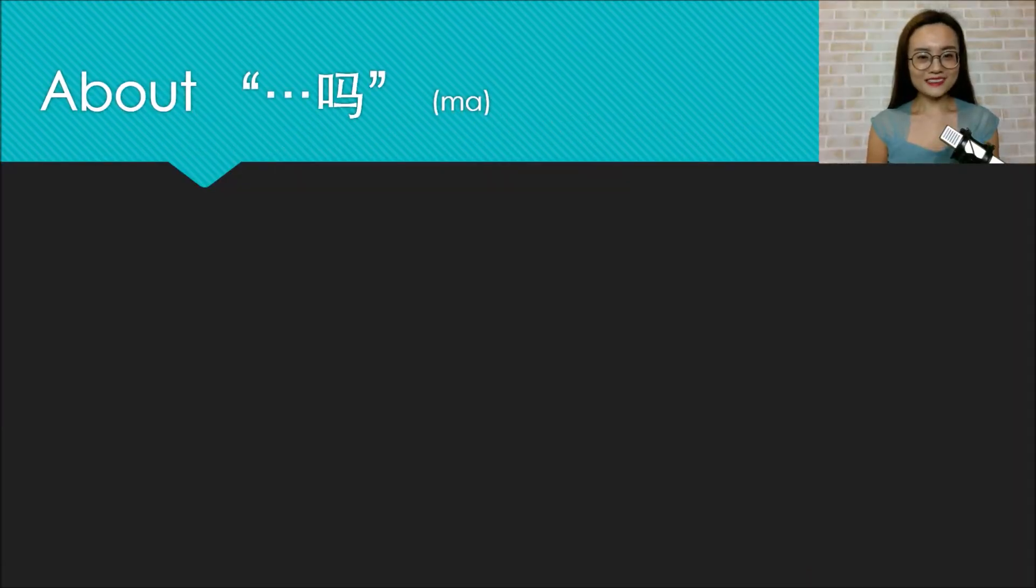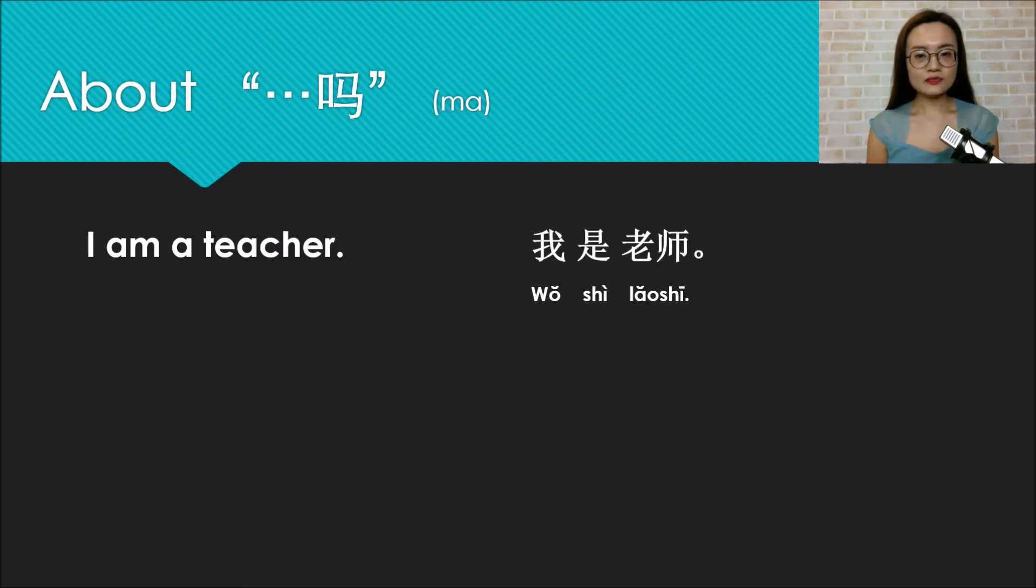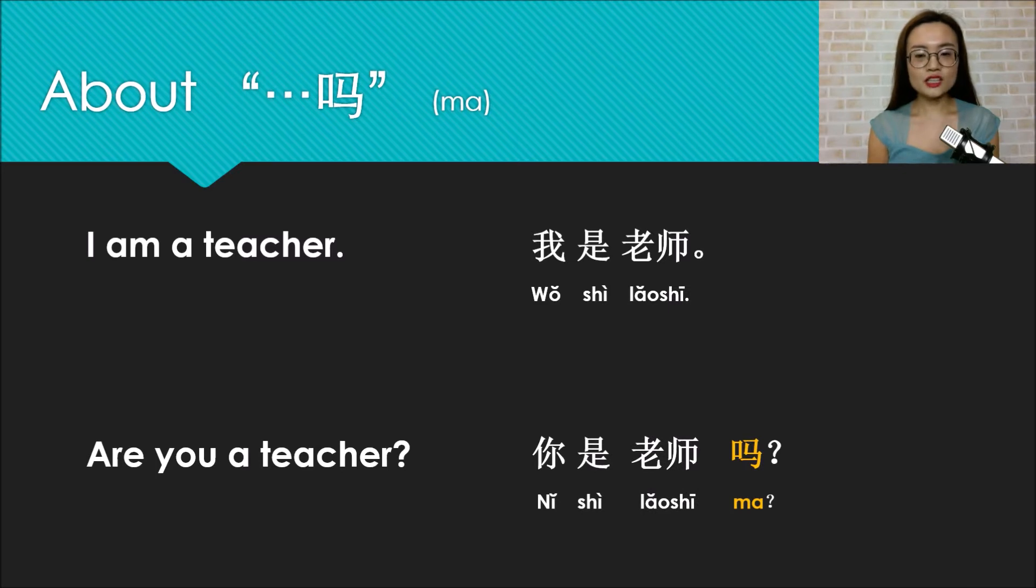Look at this sentence: I am a teacher. How to say that in Chinese? Wo shi laoshi. Then how about this question: Are you a teacher? This is asking a simple yes or no answer. So how do you ask this question? It's important to ask questions like this in Chinese because you want to be able to confirm with another person whether your assumptions are correct.